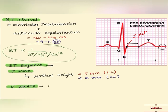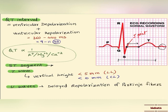Now about the U waves — these represent delayed repolarization of Purkinje fibers. It is a normal finding, but a prominent U wave is associated with hypokalemia. At heart rates above 60 to 75 beats per minute, a U wave may not be visible, but it is a normal finding in athletes and physically active persons.